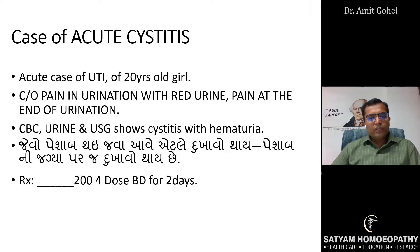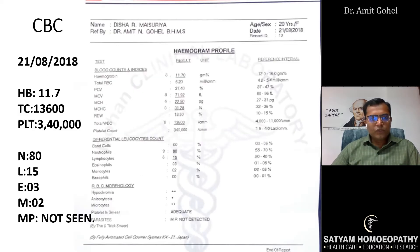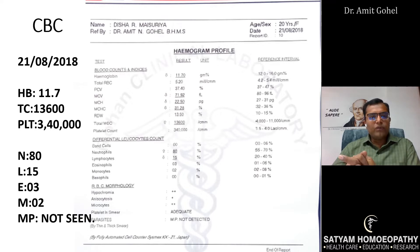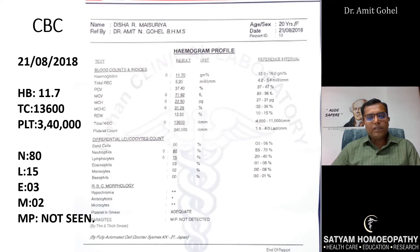The investigation was done on 21st August 2018. CBC showed: Hb was 11.7, total count was 13,600, RBCs all normal, neutrophils 80%, and lymphocytes 15%. This suggests there is an acute inflammatory process going on inside the body.